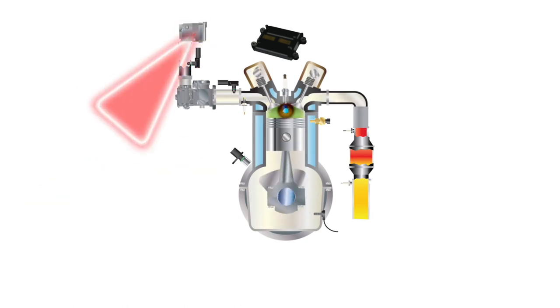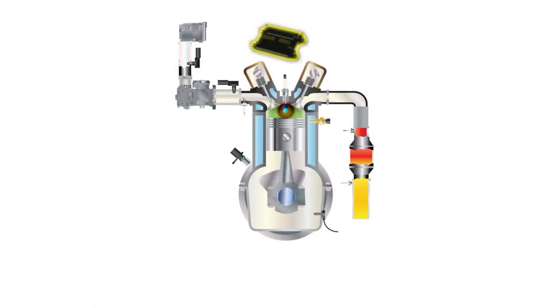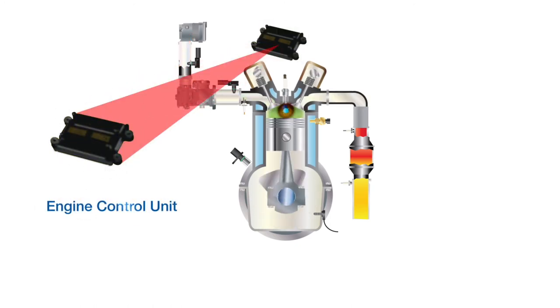The direct pressure engine regulator receives input from the ECU to control the correct flow of gaseous fuel. The engine control unit, ECU, receives input from the various sensors in the closed loop and uses these inputs to calculate the outputs to the various devices that control engine operations, such as the throttle and pressure regulator.